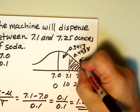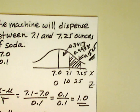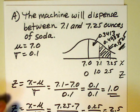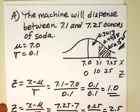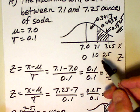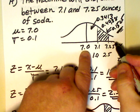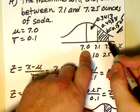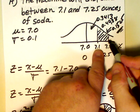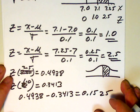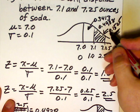So this area is 0.1525. To summarize: we had the mean value given, and we were interested in 7.1 and 7.25. We calculated Z values for 7.1 and 7.25, which turned out to be 1.0 and 2.5 respectively. We took the area associated with 7 to 7.25 and subtracted the area associated with 7 to 7.1, giving us the area from 7.1 to 7.25. The calculation was 0.4938 minus 0.3413, which turned out to be 0.1525.